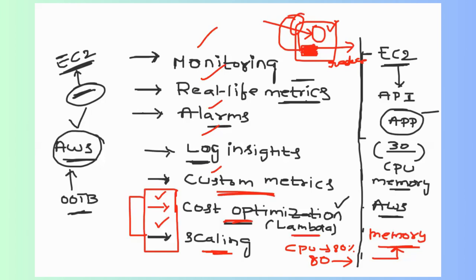Practically it's impossible to demo all of these, so I've chosen three real-life important ones: real-life metrics, custom metrics, and cost optimization. For this video I'll integrate real-life metrics with alarms — covering metrics, alarms, and custom metrics. Cost optimization will be covered in the next video once I teach Lambda functions.